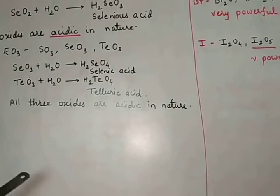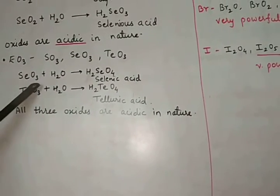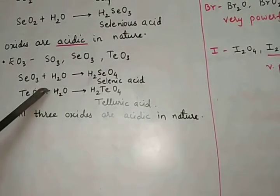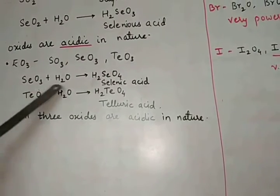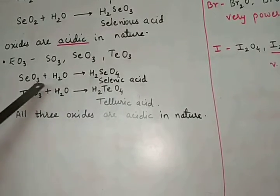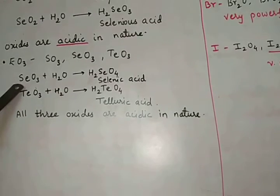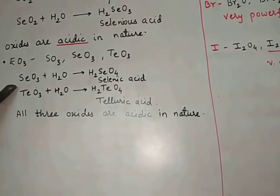An indirect question could ask that SeO3 oxide is acidic in nature. So you have to show the reaction with water and say that as it is producing an acid, it is acidic in nature. This oxide is acidic in nature. Here the reaction is expected.